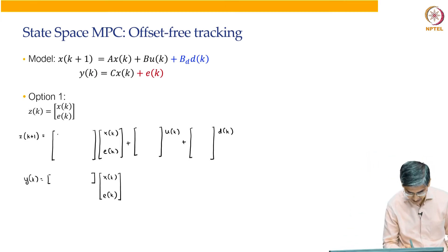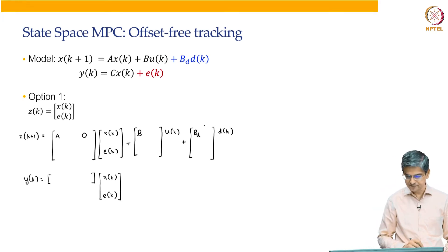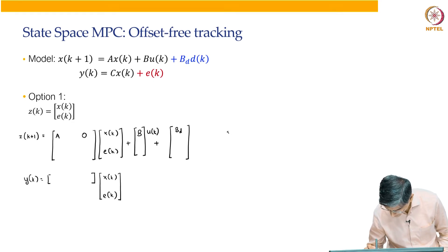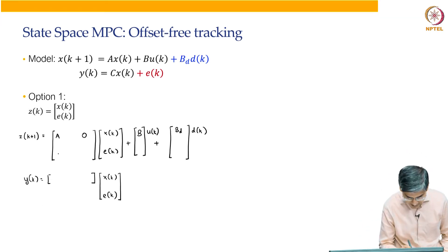So, what do we need? We need xk plus 1 equal to Axk plus 0 multiplied by Ek plus B multiplied by uk plus Bd multiplied by Dk. Now, Ek plus 1 is 0 multiplied by xk plus I multiplied by Ek plus 0 multiplied by uk plus 0 multiplied by Dk. What is yk going to be? yk is going to be C multiplied by xk plus I multiplied by Ek.